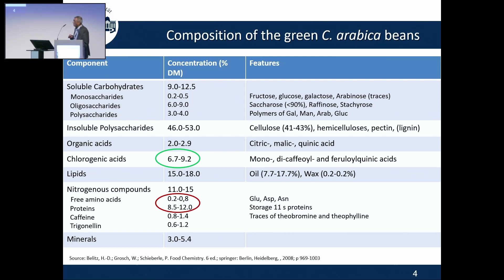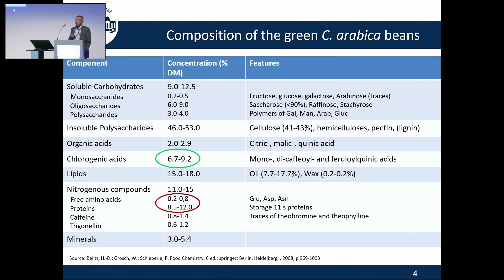We have 8% to 12% proteins. Among the free amino acids are glutamic acid, aspartic acid, and asparagine. Among the proteins, the major one is the storage legumin protein. Storage legumin protein is a plant storage protein found in many plants — soya beans, other beans, etc.